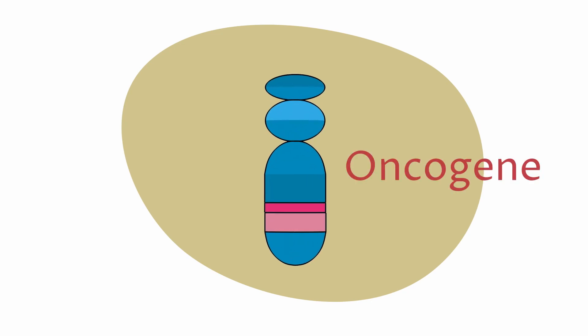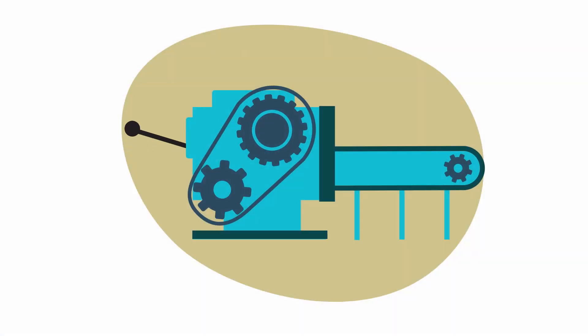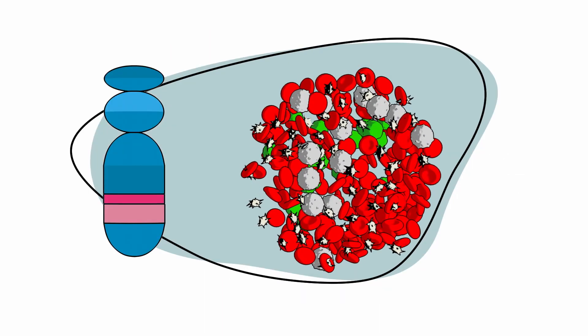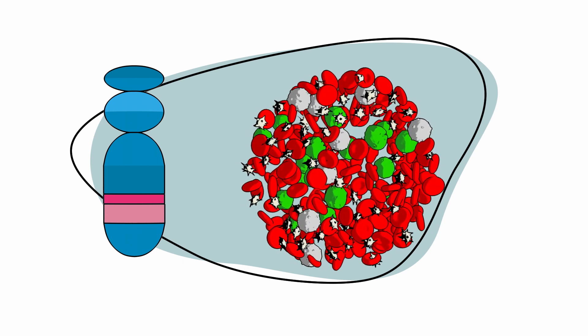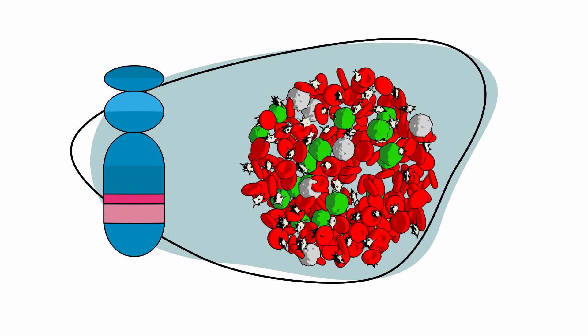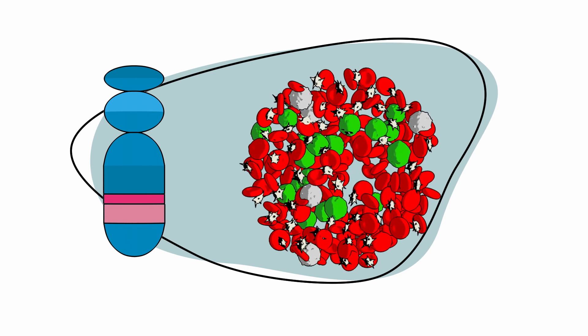BCR-ABL is known as an oncogene. Oncogenes can become permanently turned on or activated when they are not supposed to be, which can lead to cancer. The BCR-ABL gene does this by making an abnormal tyrosine kinase protein that signals CML cells to grow and multiply.